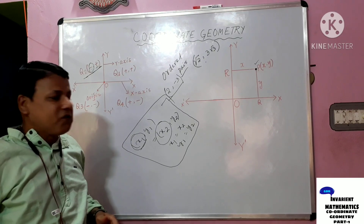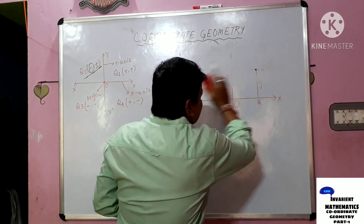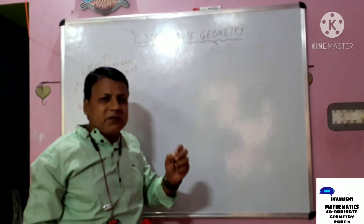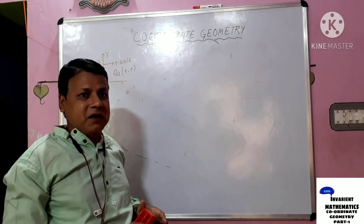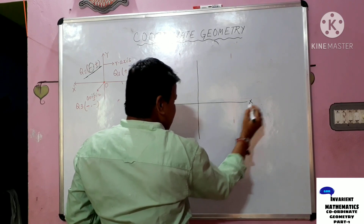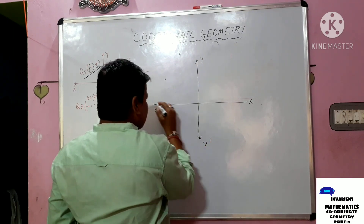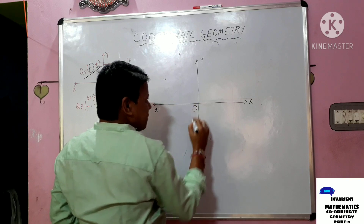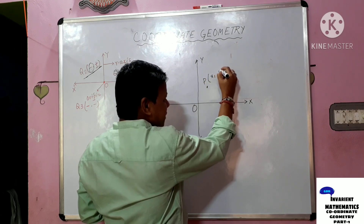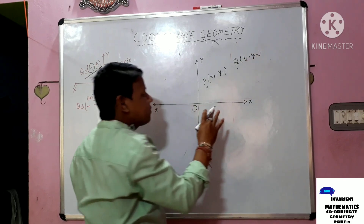Now we will enter into the first topic of this chapter, which is known as the distance formula. The objective of the distance formula is to find the distance between any two points on a plane. Suppose on a rectangular coordinate system, let P(x₁, y₁) and Q(x₂, y₂) be any two points. Our objective is to find out the distance between P and Q — that is, the length of the line segment PQ.